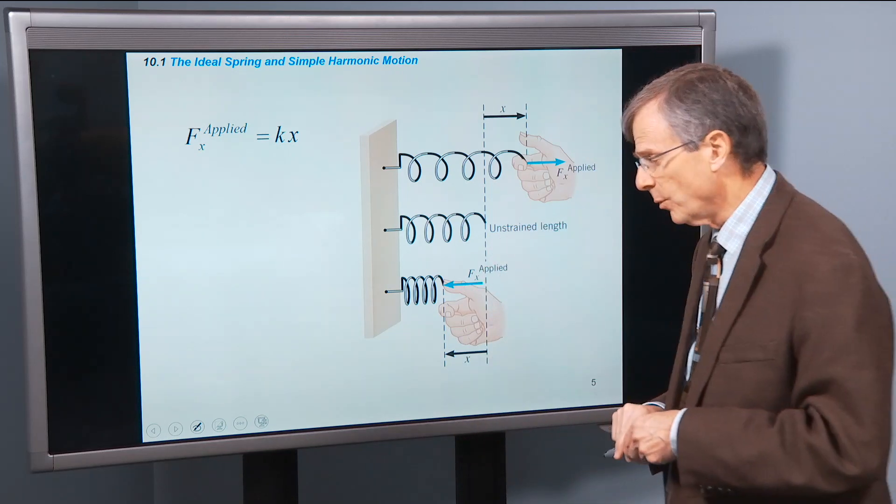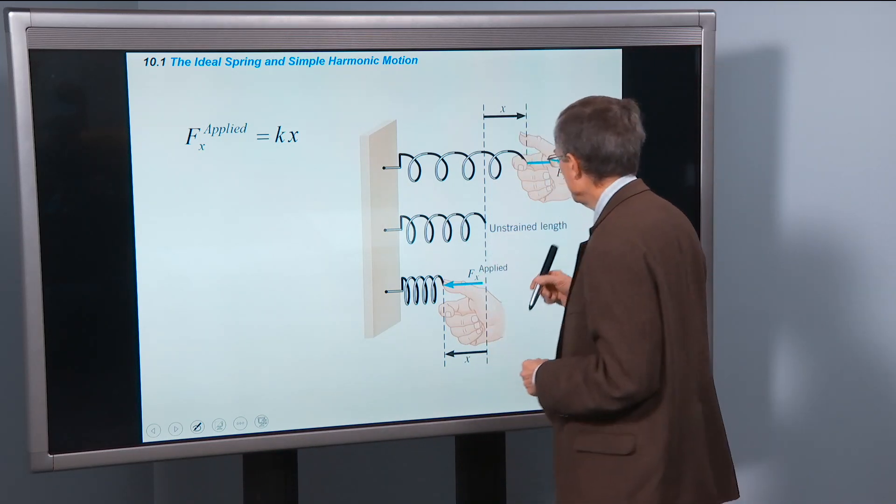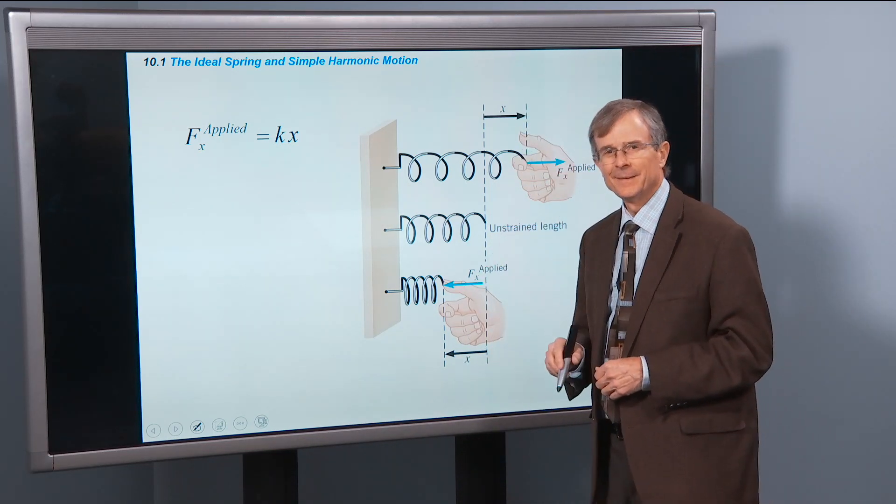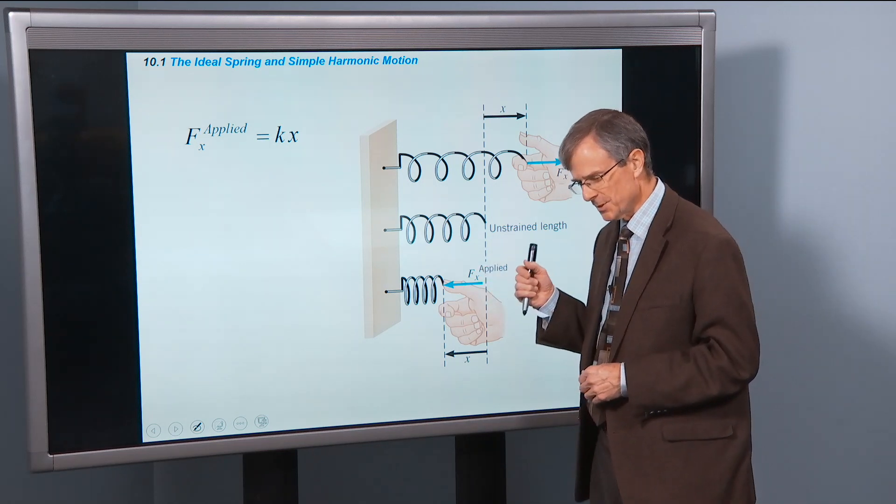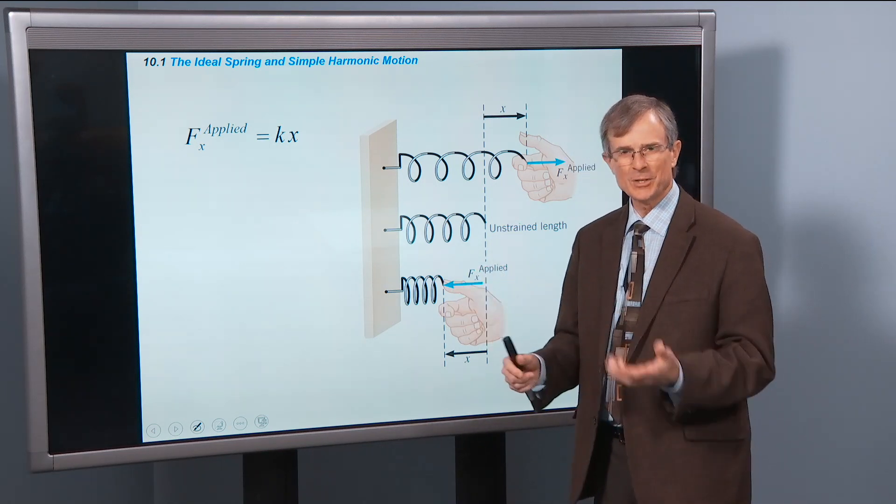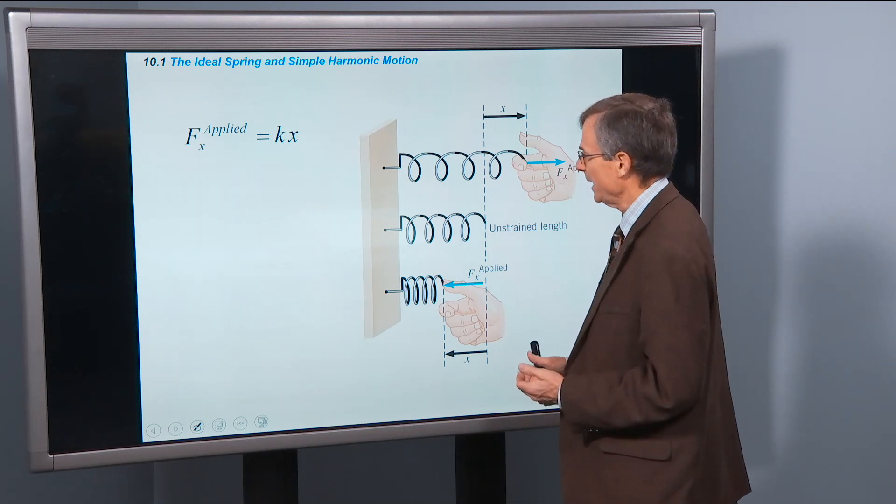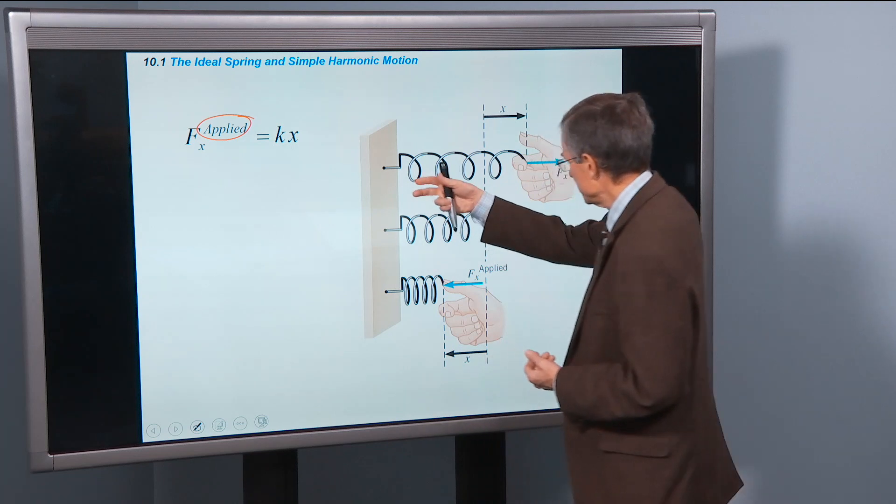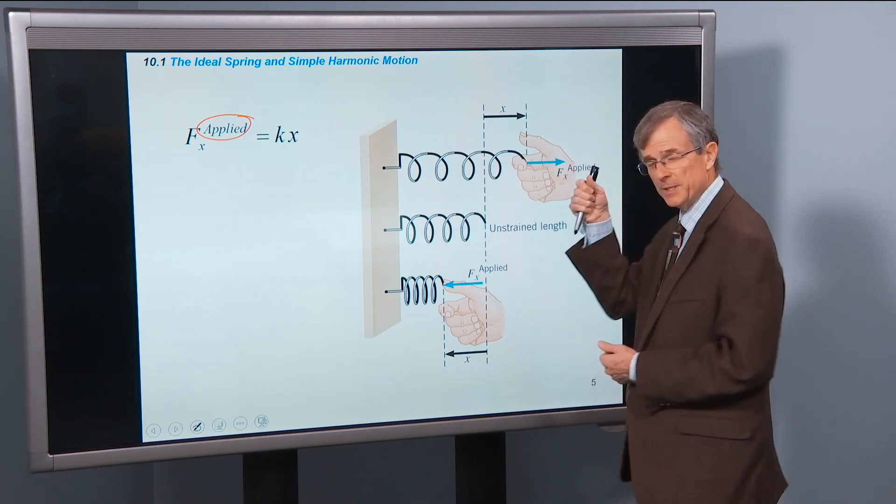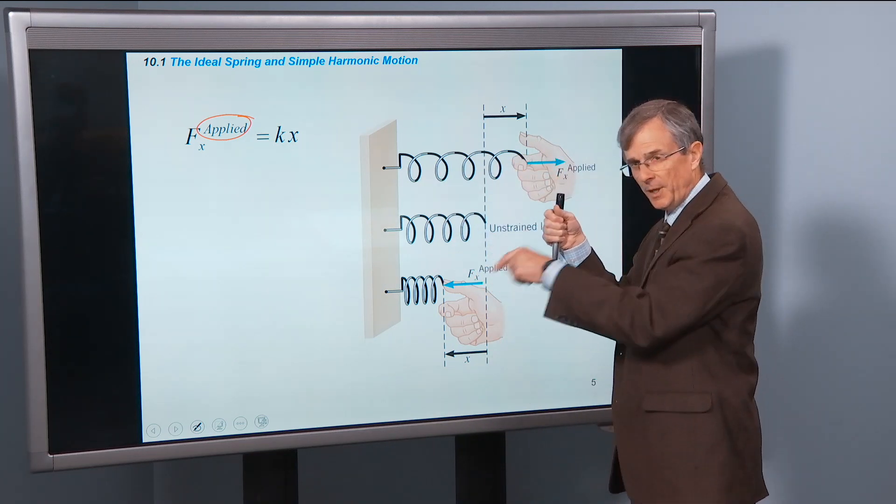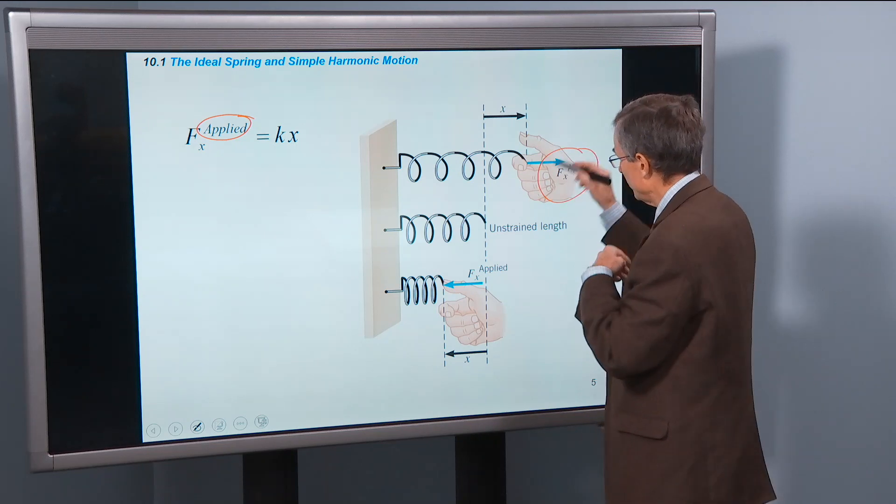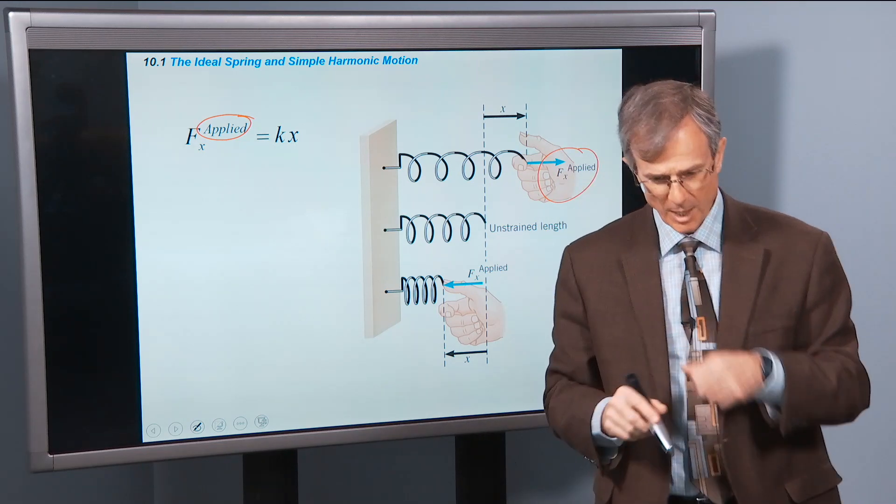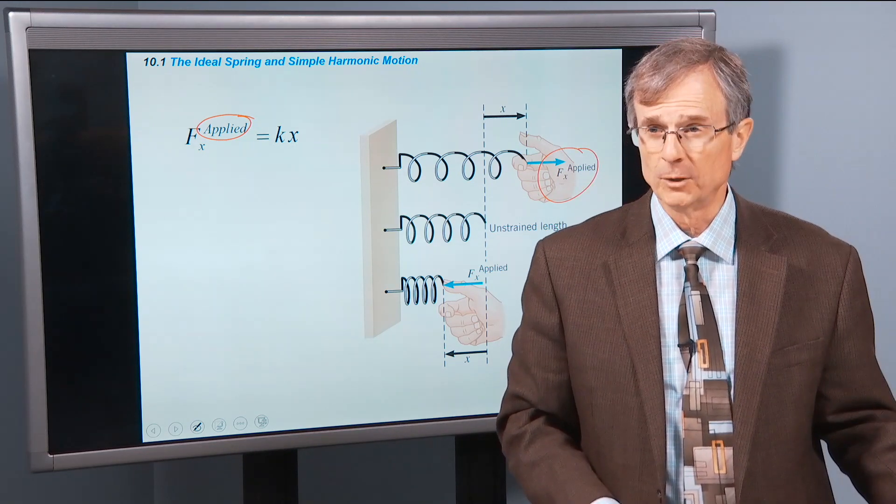Now the applied force, the force that you have to apply with your hand to stop that spring from pulling you back, is just opposite to the actual spring force. So this is the force of your hand. If you displace the, if you pull the spring to the right, it's pulling you to the left. So your applied force is going to be opposite to the Hooke's Law force.